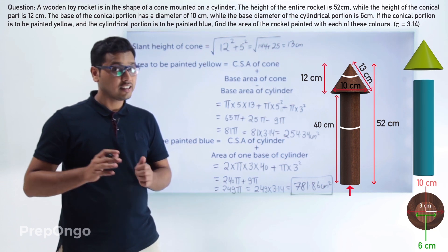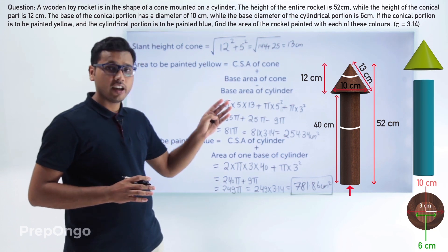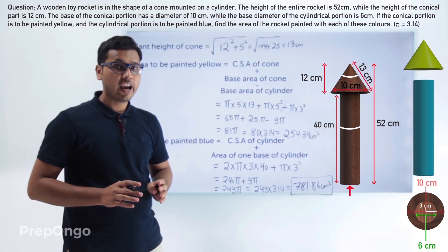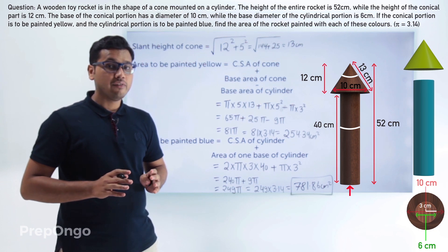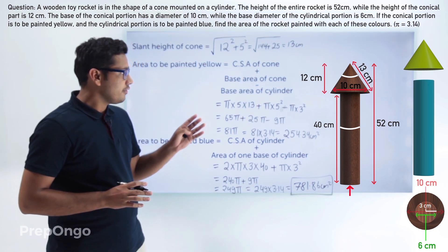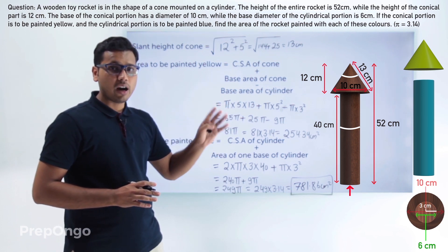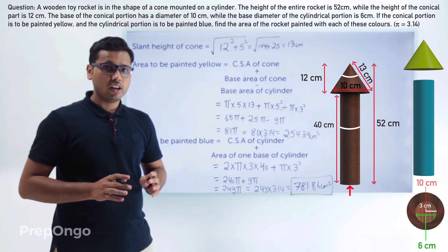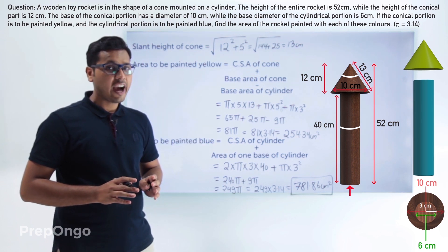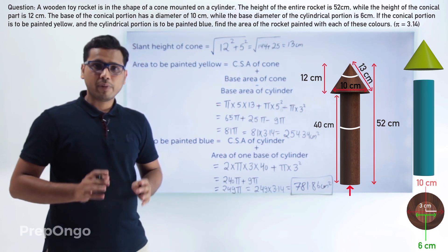In this question we first separated the two portions of the solid. Then we found out which areas we had to calculate. We had to paint the conical part yellow and the cylindrical part blue, so we found out only those areas which needed to be painted.